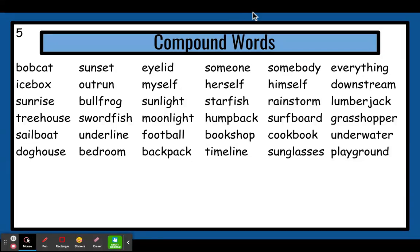We have some and one. Put them together, you have someone. Next word, we have some again, and the second smaller word, buddy. Some body. Somebody. Next word, we have the first part — the first word by itself is every, and the second word is thing. We have every, thing. Put them together: everything.